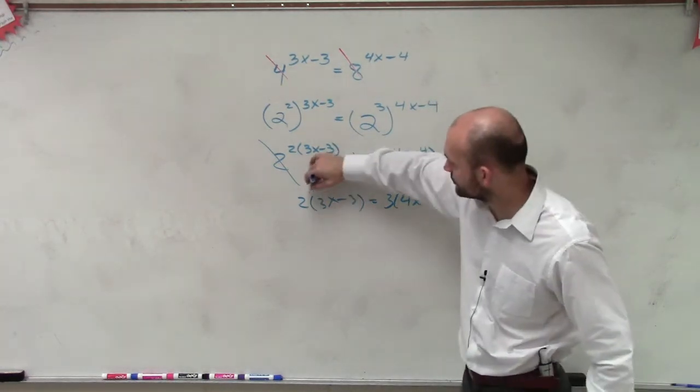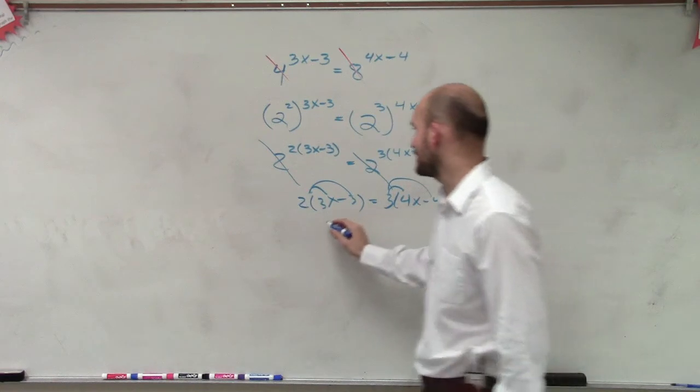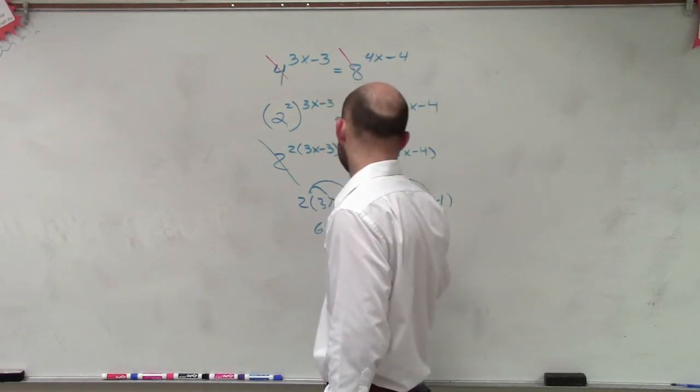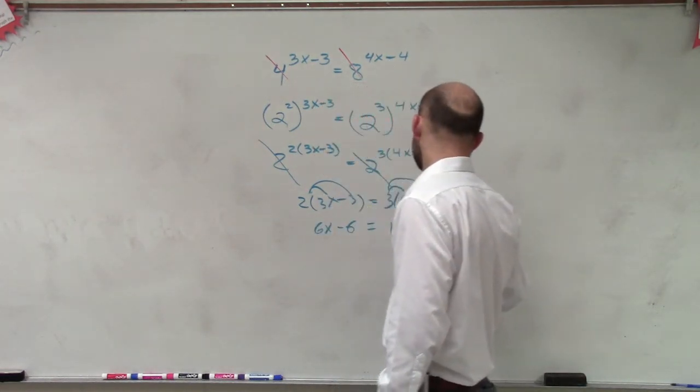Now we distribute by using the distributive property. And I get 6x minus 6 equals 12x minus 12.